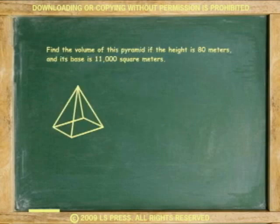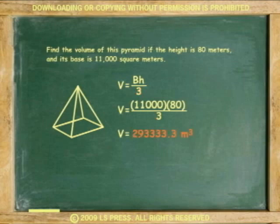Another example, find the volume of this pyramid if the height is 80 meters and its base is 11,000 square meters. The volume of the pyramid equals the area of the base of the pyramid times the height divided by 3. 11,000 times 80 divided by 3 or 293,333.3 cubic meters.